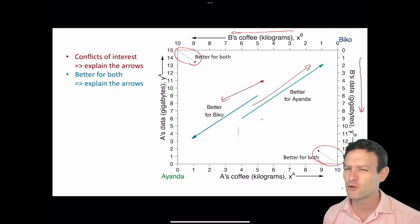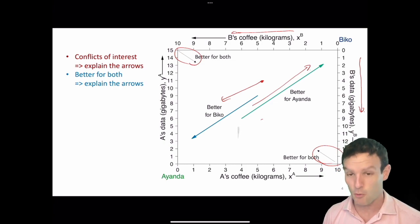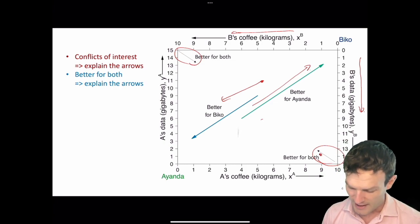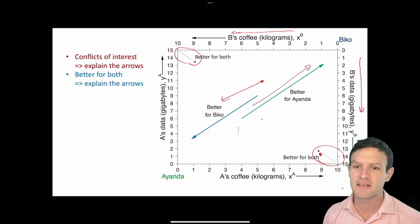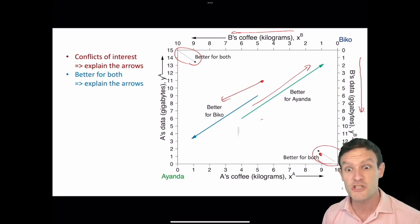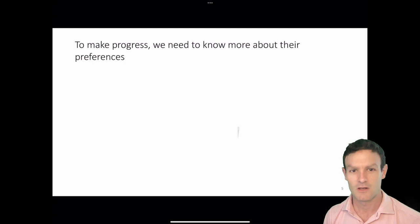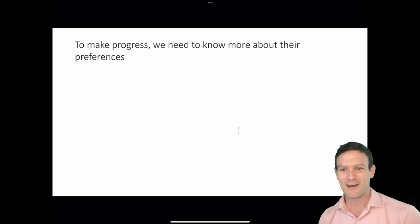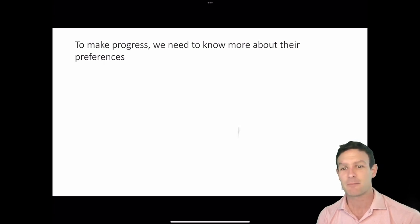If you're unsure about what's going on, think about what would happen if we were at point z and Ianda could potentially get one more unit of y by giving up a unit of x. Would she be willing to do that? Have a think about that. To make progress with this question about what they're willing to do, we need to think about their preferences.